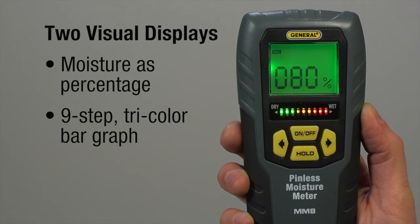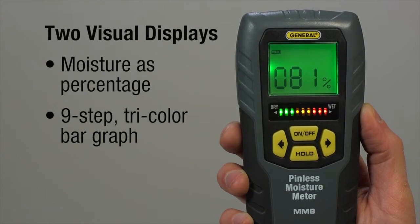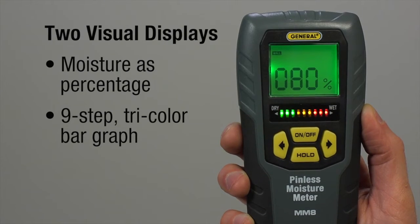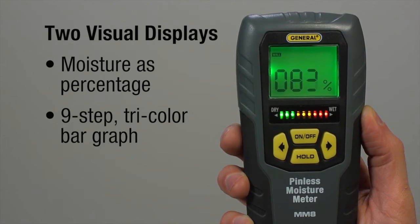When you measure, the bank of colored LEDs roughly mirrors the digital reading above. Green indicates dry. Red, wet. And yellow, intermediate.